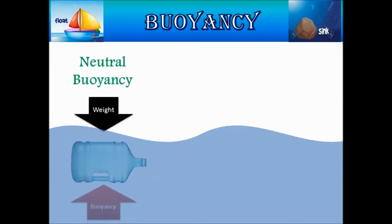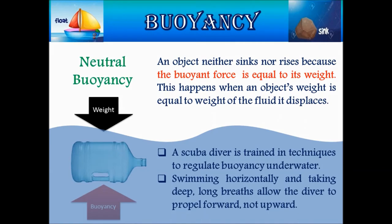Neutral buoyancy occurs when the weight of the object is equal to the buoyant force. Due to neutral buoyancy, an object neither sinks nor rises. This happens when an object's weight is equal to the weight of the fluid it displaces. An example of neutral buoyancy is a scuba diver, who is trained in techniques to regulate buoyancy underwater. Swimming horizontally and taking deep, long breaths allow the diver to propel forward, not upward.